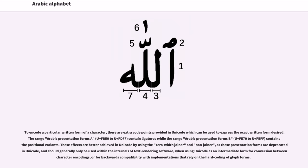To encode a particular written form of a character, there are extra code points provided in Unicode. The Arabic Presentation Forms-A range (U+FB50 to U+FDFF) contains ligatures, while the Arabic Presentation Forms-B range (U+FE70 to U+FEFF) contains the positional variants. These effects are better achieved in Unicode by using the zero width joiner and non-joiner, as these presentation forms are deprecated in Unicode and should generally only be used within the internals of text rendering software, when using Unicode as an intermediate form for conversion between character encodings, or for backwards compatibility with implementations that rely on hard-coded glyph forms.